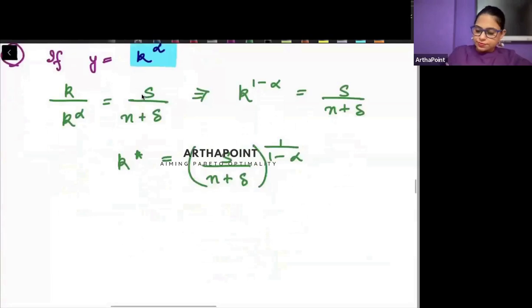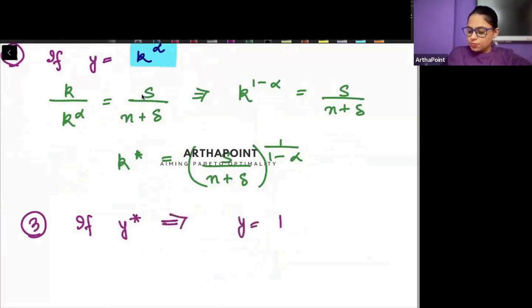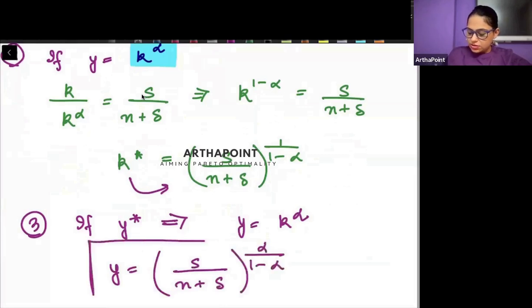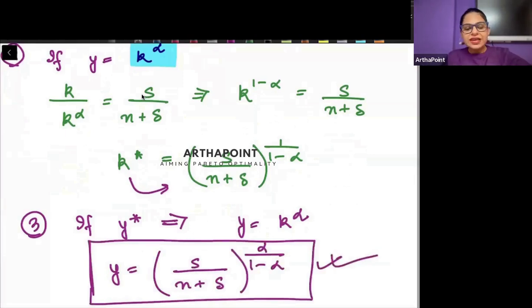Right. Step number 3. If they ask you find steady state value of output, output is k to the power alpha. k is this. So, output will be s upon n plus delta to the power alpha upon 1 minus alpha. So, we can go ahead and we can find all three things. We can know the steady state level of capital, what is the steady state value of output and what is the capital to output ratio.